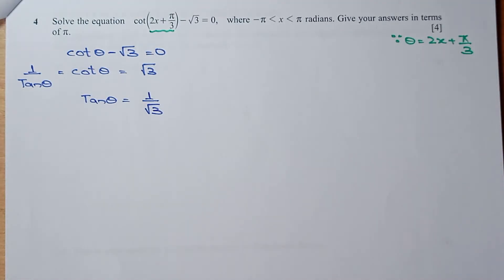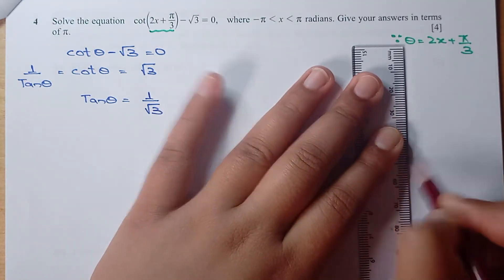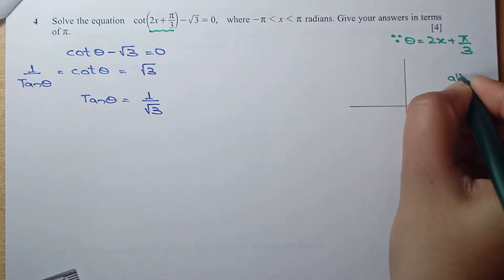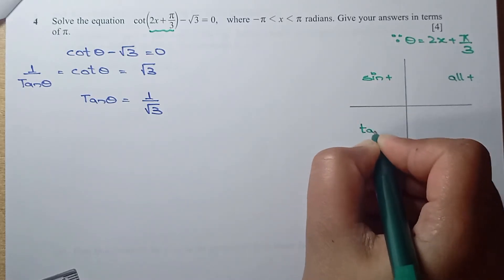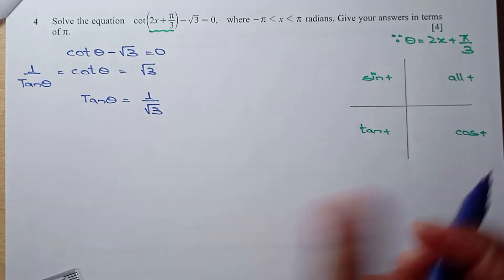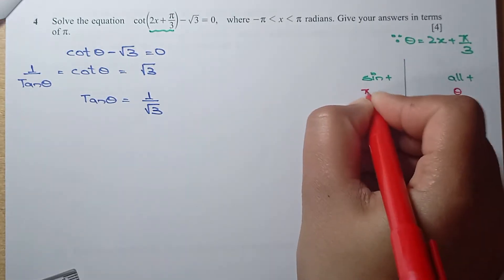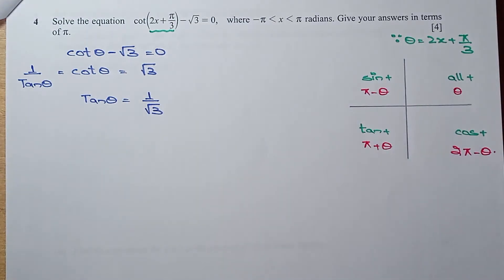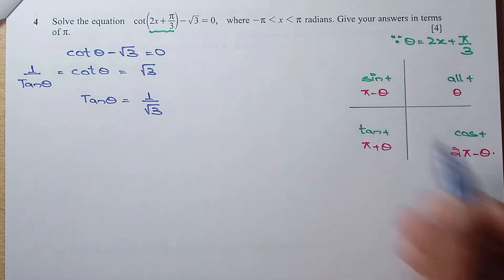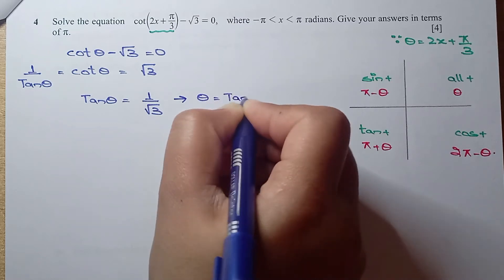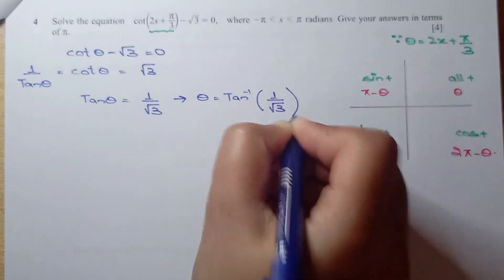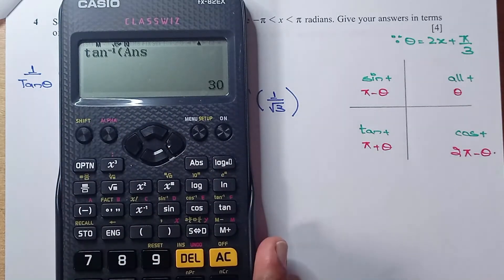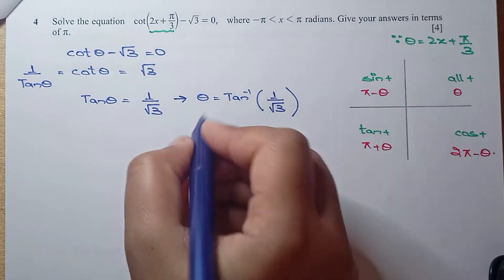Tangent is positive in the first and third quadrants. Tan inverse of 1 over root 3 is 30 degrees, which is pi/6 in radians. For the first quadrant, theta equals pi/6. For the third quadrant, theta equals pi plus pi/6 equals 7pi/6. Since the domain is from minus pi to plus pi, we add and subtract 2 pi to find all theta values: pi/6, 7pi/6, 13pi/6, 19pi/6, minus 11pi/6, and minus 5pi/6.